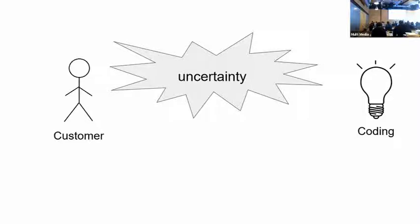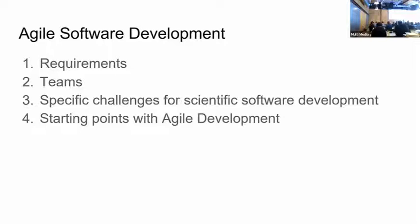A lot of the uncertainty in software development comes from the customer — the person who delivers requirements to the team. Software developers have run into a lot of trouble trying to define requirements. Customers don't necessarily know what their requirements are, and business environments change, so a month later they come back and say things need to change. Uncertainty also comes from the actual process of coding — once we implement requirements, we learn new things and new constraints come up. Agile is all about handling the idea that we don't really know what we'll run into down the line.